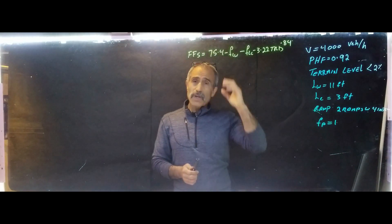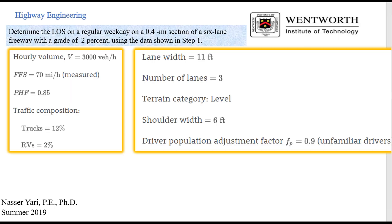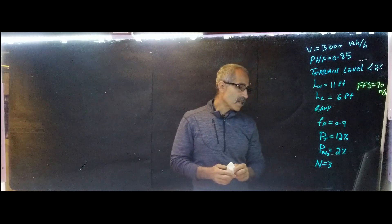All right. Let's do another problem. This time, the second problem. Let's do the second problem. This problem, as we have, I got on a board right here too. It says that the hourly volume is 3,000 vehicles per hour, and our peak hour factor is 0.85. The profile is less than 2%, and lane width is 11 feet. The right shoulder is 6 feet. And then we have the driver familiarity is unfamiliar driver. So it's 0.9, and percent truck is 12%. RV is about 2%. Number lane is 3, and they're given this FFS is at 70 mile per hour.